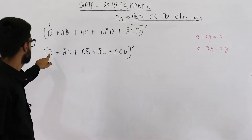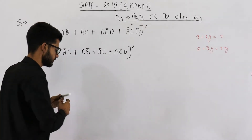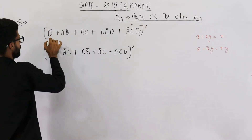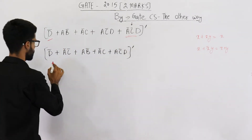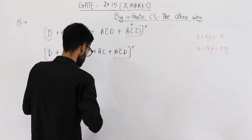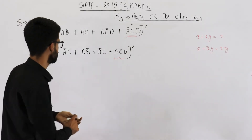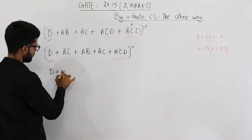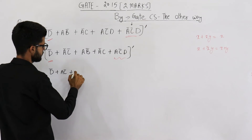Now again let's apply the absorption law on this one as well as on this one. In the first step we applied absorption law in two places; now we are applying it again. So what you will get is d complement plus ac̄, and we copy all the remaining three terms as they are.